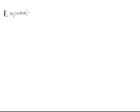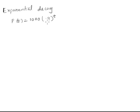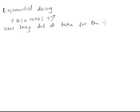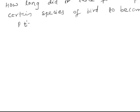Now, how to calculate the time for exponential decay. This is an example of exponential decay. Let the population of a certain species of bird follow this population model. Because 0.9 is less than 1, the base is less than 1, so we can see that the population is decreasing. Our problem is: how long did it take for the population of a certain species of bird to become 250?